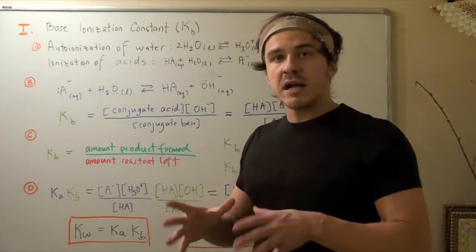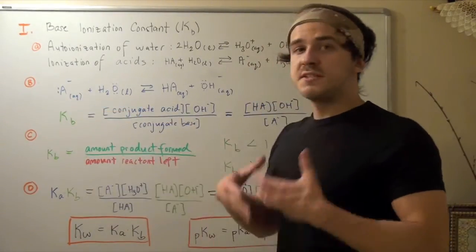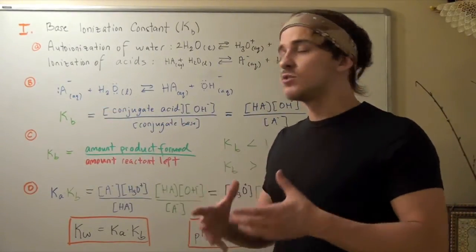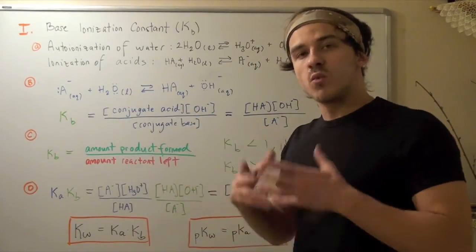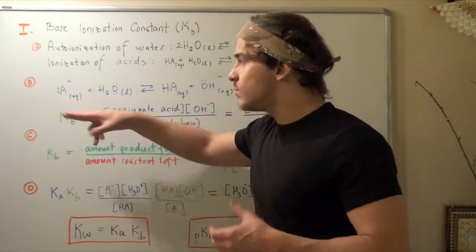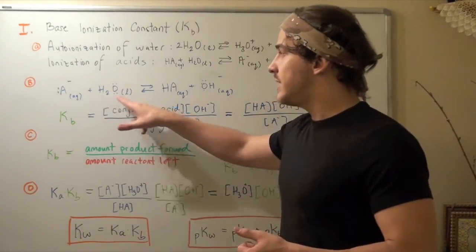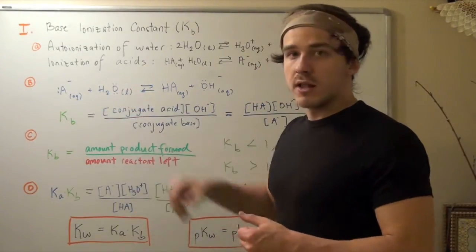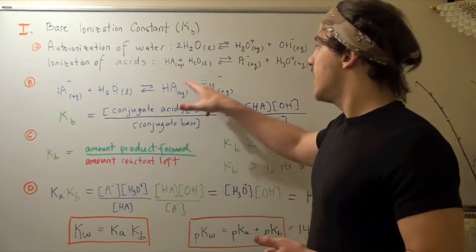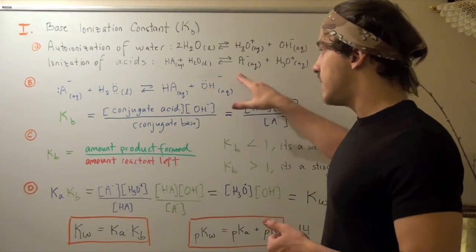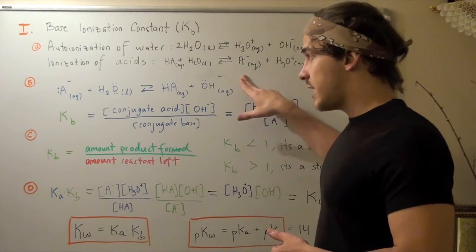Let's suppose we have some hypothetical base — let's call it A. This base in aqueous state reacts with a single water molecule in a liquid state. Our base will act as a base, trying to take that H away from our acid, namely our water molecule. And these will create a conjugate acid, HA, and a conjugate base, our hydroxide molecule — both in aqueous state.